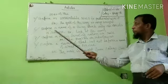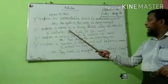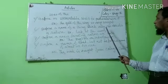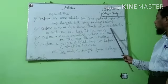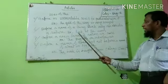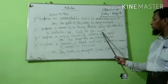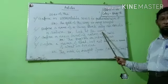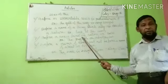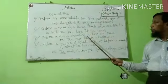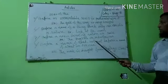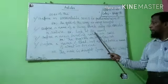Number six: before the name of a thing of which only one exists in nature. Example: Look at the moon. The sun rises in the east. The earth moves around the sun. This is the definite article.